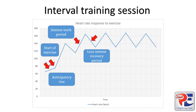A HIIT session alternates periods of intense work and recovery — intense work, recovery, intense work, recovery, intense work, recovery. What you see on the graph are these peaks and troughs, the bits that go up and the bits that go down, which really show that somebody has built those work and recovery periods into their training.